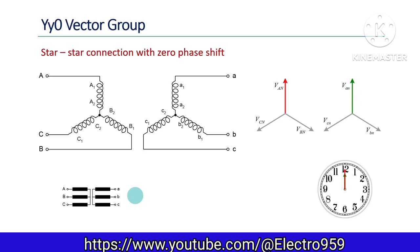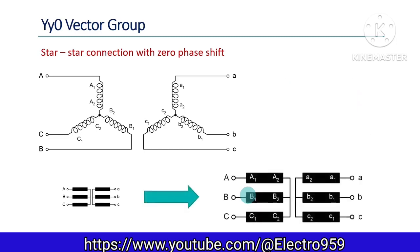We can have a simplified connection diagram, which will normally be printed on the transformer nameplate, and also a displacement diagram which shows the connections of the two windings and indicates the phase difference between them. In the simplified connection diagram, the polarities of each winding are represented as follows: on the primary side, A1, B1, C1 are on the left side, and on the secondary side, A1, B1, and C1 are on the right side. The primary terminals are represented with uppercase letters A, B, and C, and the secondary terminals with lowercase letters a, b, and c. We shall follow this convention throughout this video.